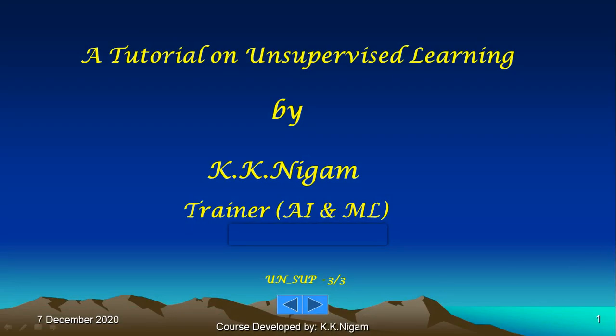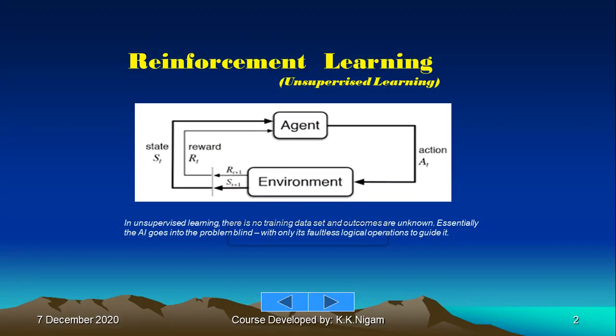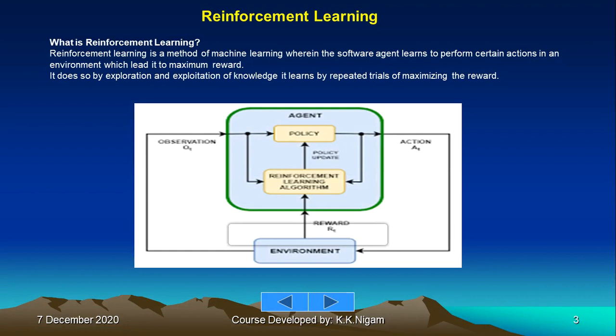Let's start with the third tutorial on unsupervised learning — this is for reinforcement learning. In unsupervised learning there is no training data set and outcomes are unknown; essentially the AI goes into the problem blind, with only its failures and logical operations to guide it. So what is reinforcement learning?